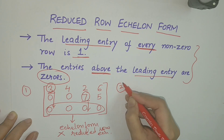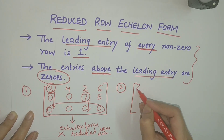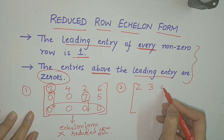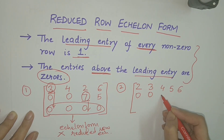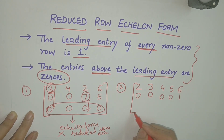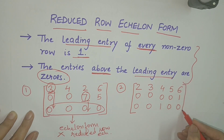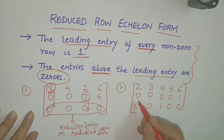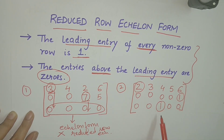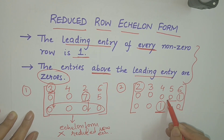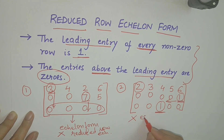Let us take another example. Consider the matrix [[2,3,4,5,6],[0,0,0,0,1],[0,0,1,0,0]]. Here the leading entries of each row are 2, 1, and 1. It can be seen that the leading entry of the third row is to the left of the leading entry of the previous row. So this is not in echelon form.